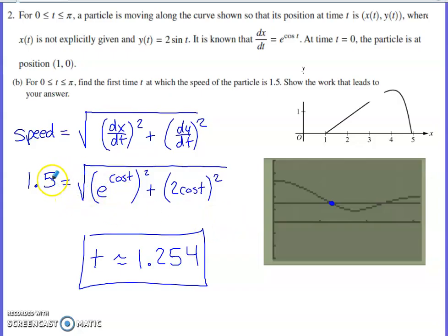...we set our speed calculation equal to 1.5. The calculator is in play, so I've already graphed this. I graphed the speed function, which is the graph of that square root function you see on the right side of this equation. Then I graphed y equals 1.5, and I found the first time when the speed function hits 1.5, which occurs at this time. All that work was done on the calculator.